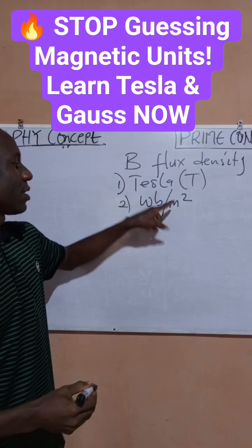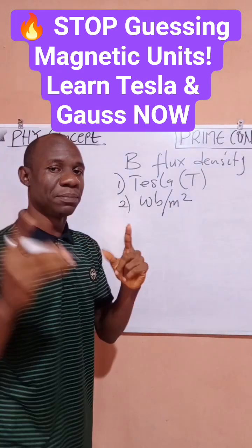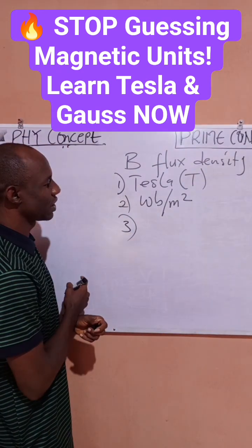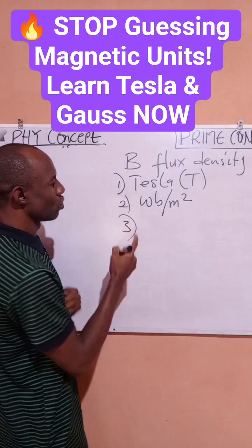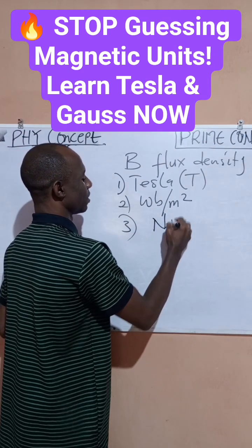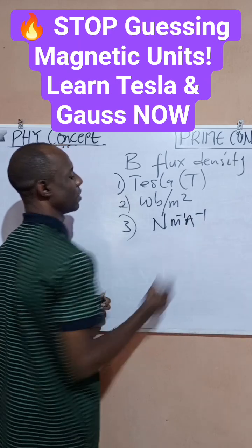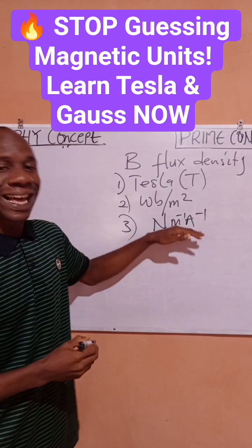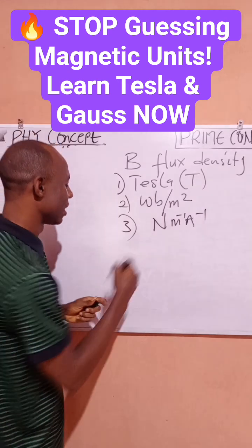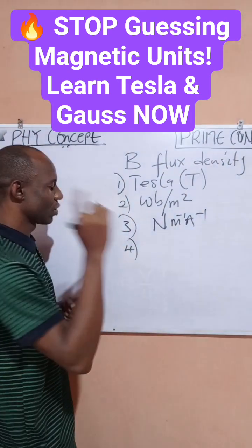So both units are equivalent — one tesla is the same as one weber per meter squared. Number three: another unit for magnetic flux density you need to know is newton per meter per ampere. This is another SI unit for magnetic flux density.